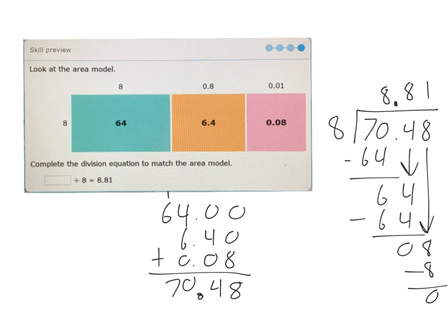But I wanted to visualize for you. Over here, I did the traditional algorithm with this dividend, 70.48. 70.48 divided by 8 equals 8.81. So we see that we end up actually doing 64 divided by 8 right here. Then again, 64, which is 6.4 divided by 8 there. And finally, the 8 divided by 8 is the 1. So you see the connections between this model and the algorithm, just making it visual.